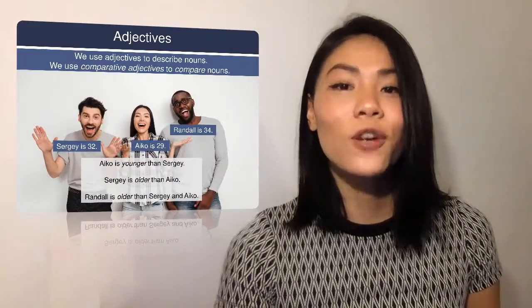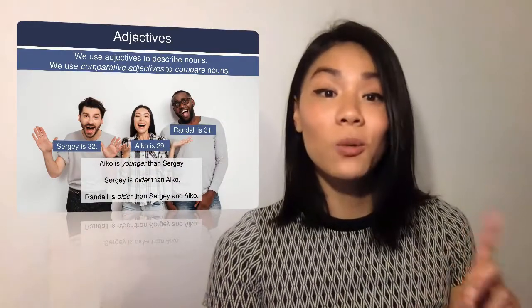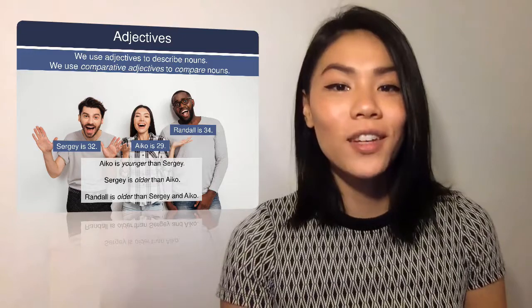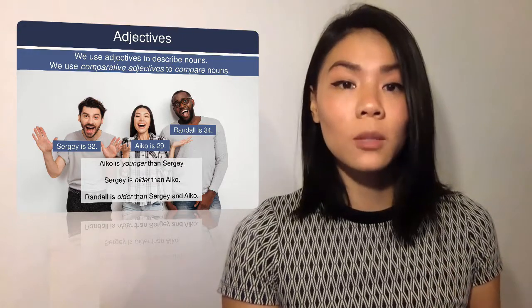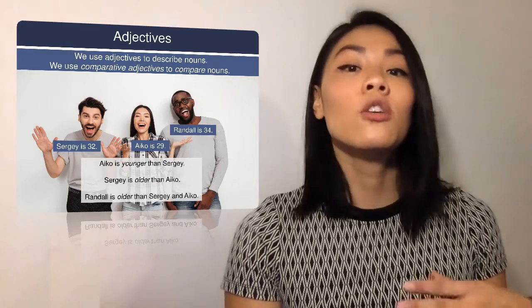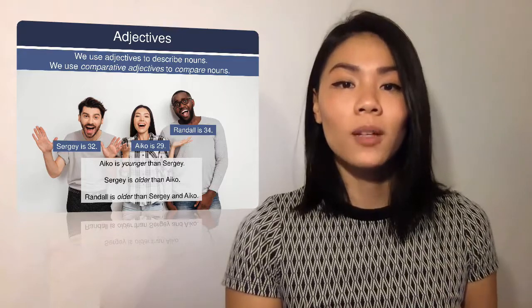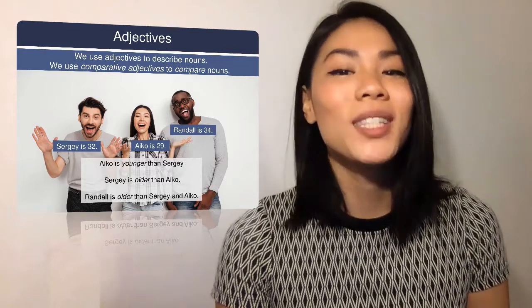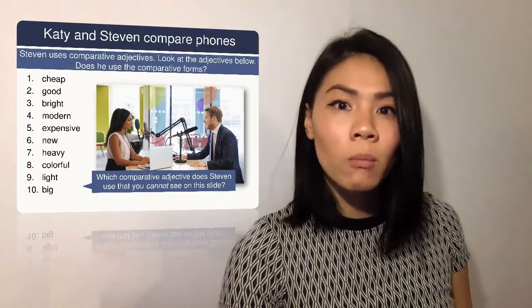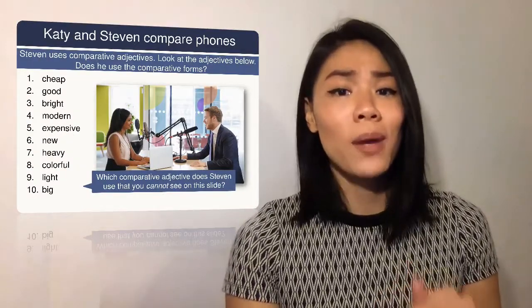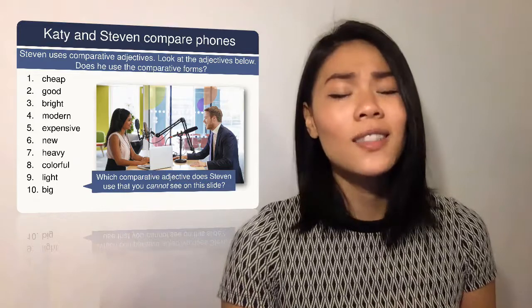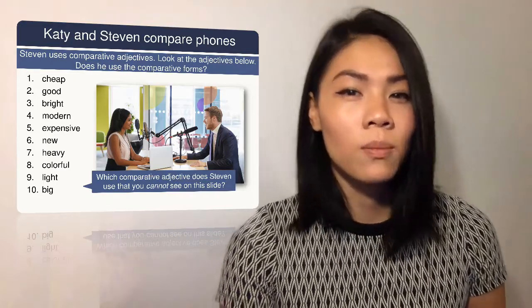It's pretty easy. For one-syllable words, just add -er to the suffix, and when an adjective has two or more syllables, use the word 'more' in front of it. So we don't say things like 'this couch is modern-er' — we say 'this couch is more modern.' But avoid comparative adjectives that don't follow the rules.